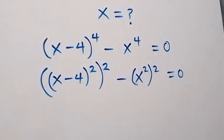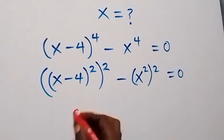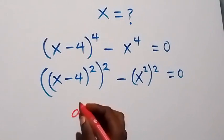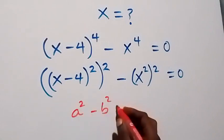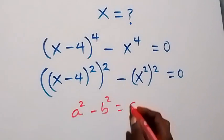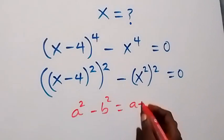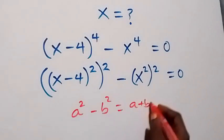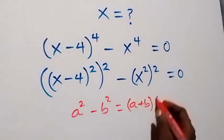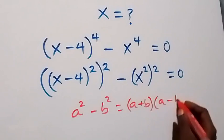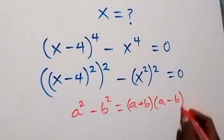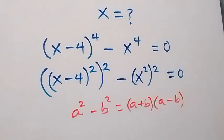Now, this follows from the difference of two squares. We have a squared minus b squared, and this gives us a plus b multiplied by a minus b.